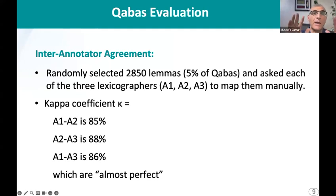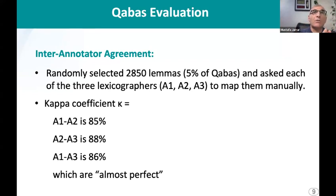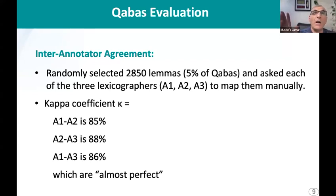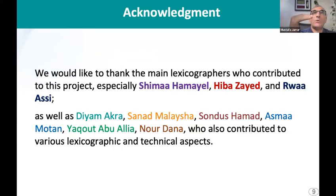Qabas was developed semi-automatically, as shown. We used some automation, but it was built semi-automatically. After digitizing everything — which took us maybe 12 years — we developed a portal to build Qabas. We employed several lexicographers and taught them how to do it. It took about two to three years to develop Qabas.